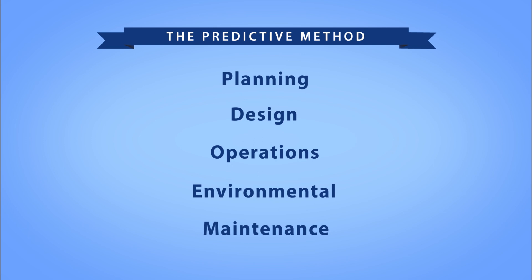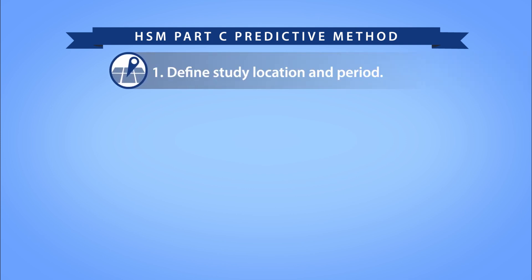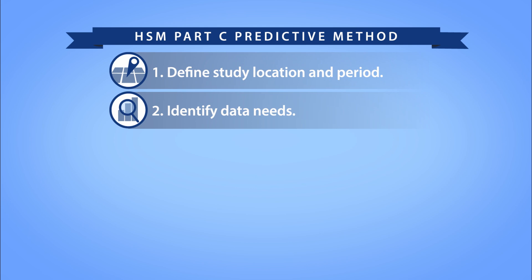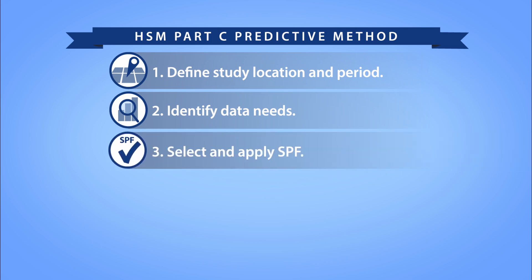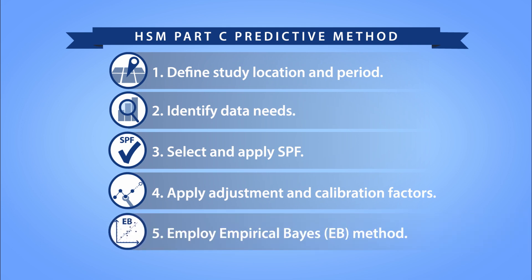In this video, you will learn the process for applying the Part C Predictive Method — specifically, how to define the study location and study period, identify data needs, select and apply an appropriate safety performance function or SPF to estimate predicted crashes for base conditions, apply adjustment and calibration factors to reflect site-specific and local conditions, and when appropriate, employ the Empirical Bayes or EB method to estimate long-term average expected crashes.